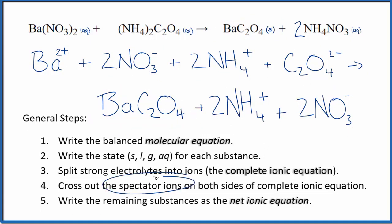Now we can cross out spectator ions. They're on both sides of the complete ionic equation. We have barium. We have these two nitrate ions in the reactants and in the products. Those are spectator ions. They haven't changed. So we cross those out.